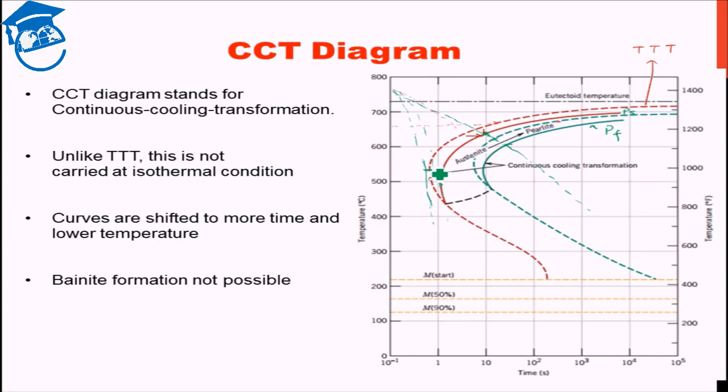Some alloying elements shift the curves to the right, that is, at lower time. Thereby, they fasten the nucleation process and let the pearlitic formation finish at a quicker time.